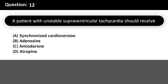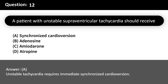A patient with unstable supraventricular tachycardia should receive: A. Synchronized cardioversion. B. Adenosine. C. Amiodarone. D. Atropine. Answer: A. Unstable tachycardia requires immediate synchronized cardioversion.